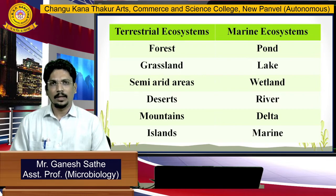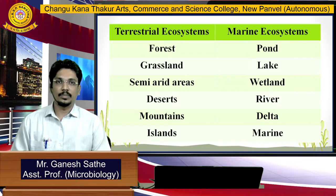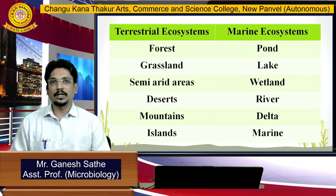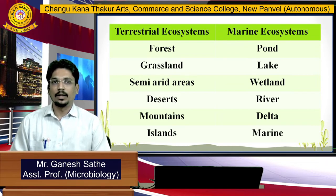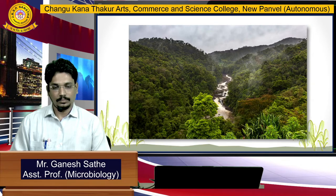Terrestrial ecosystems include forest, grassland, semi-arid areas, desert, mountains, and islands. Marine ecosystems include pond, lake, wetland, river delta, and marine environments.